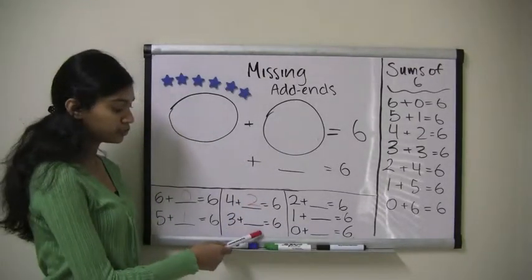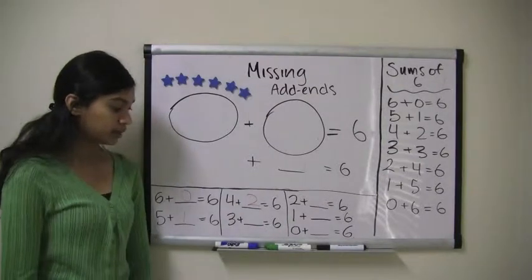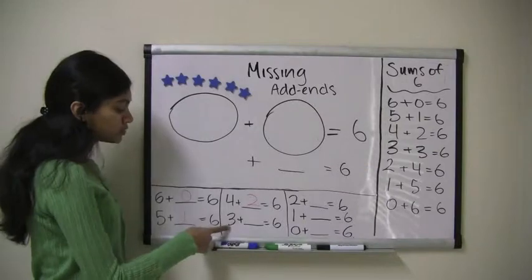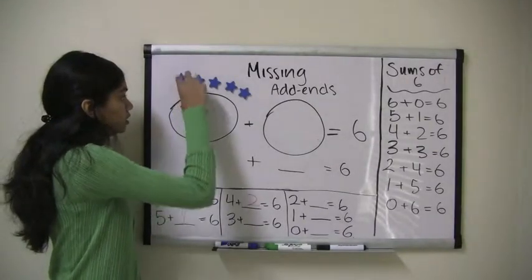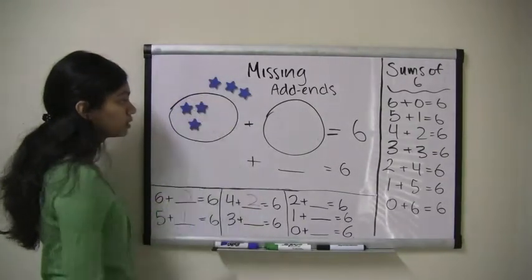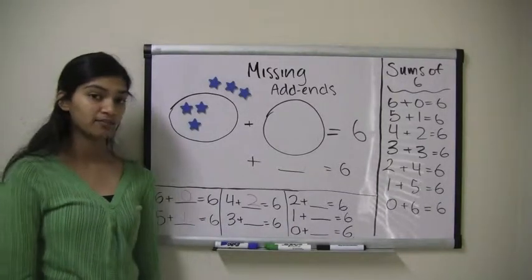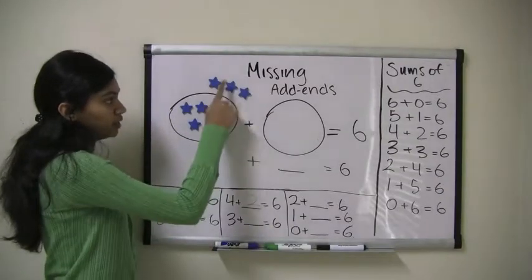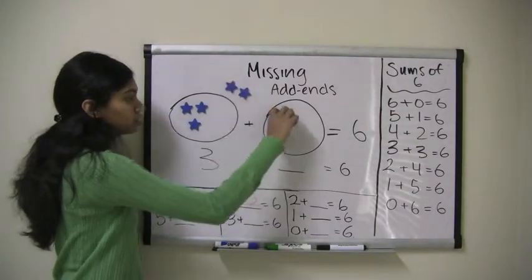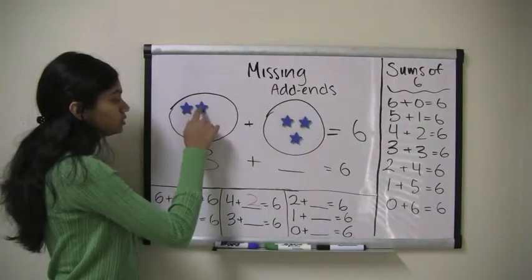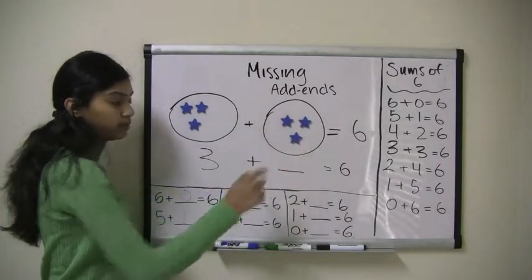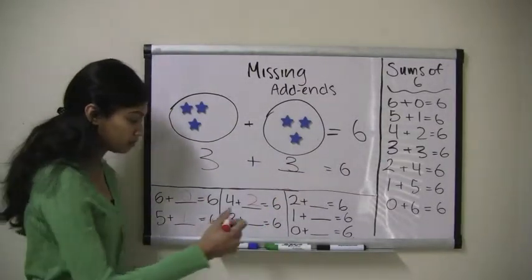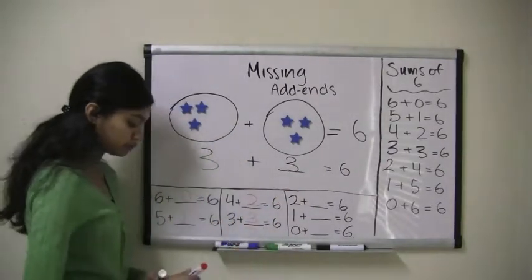If we look at the problem 3 plus what equals 6, can we guess what the answer must equal? Well, let's find out. So, I must put 3 stars in the first area: 1, 2, 3. Now, how many stars do I have left to put in the second area? I have 1, 2, 3 stars. So, 1, 2, 3 plus 1, 2, 3 equals 6. So, 3 plus 3 equals 6.